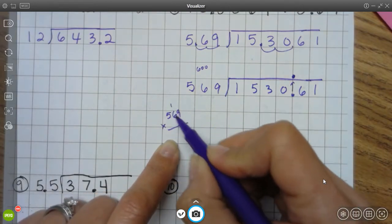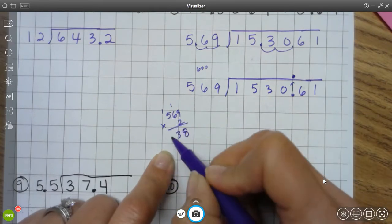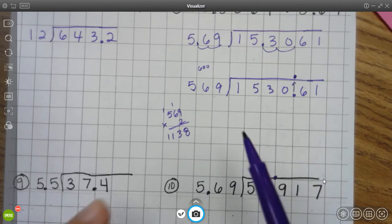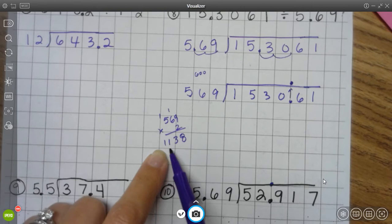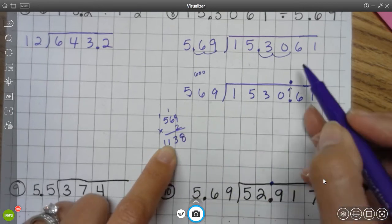9 times 2 is 18. 6 times 2 is 12 plus 1 more is 13. 5 times 2 is 10 plus 1 more is 11. All right, so if I added, if I did times 3, I'm adding at least another 500 on here, which would put me at 1,600, which would put me over. So times 2 is correct.